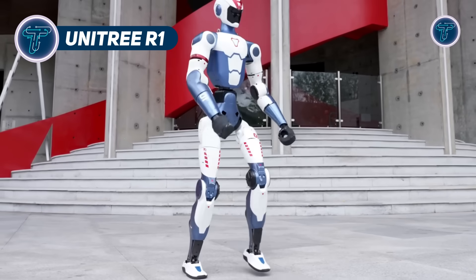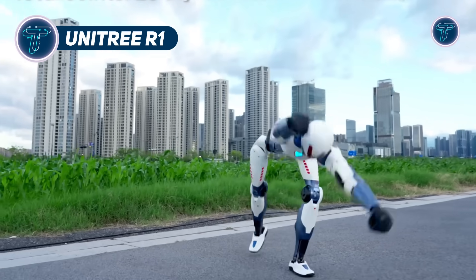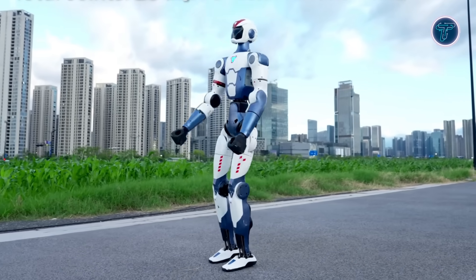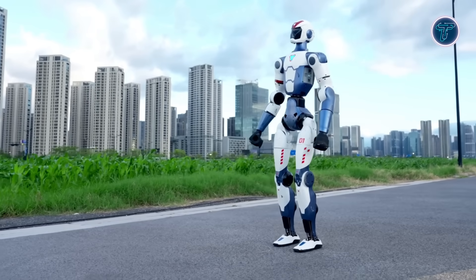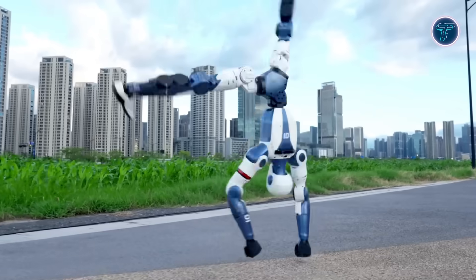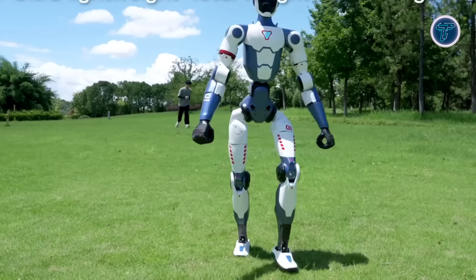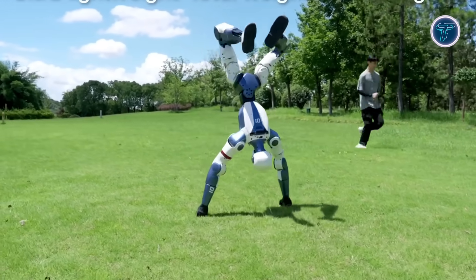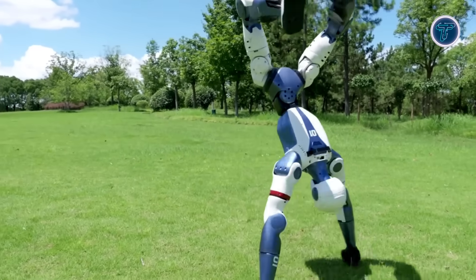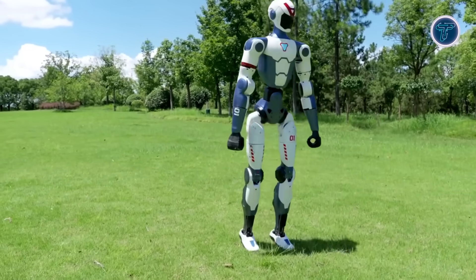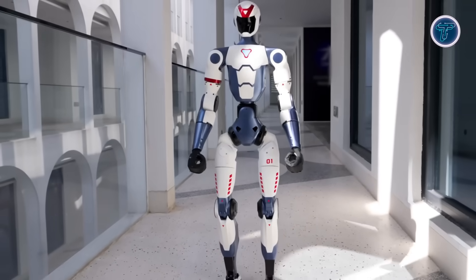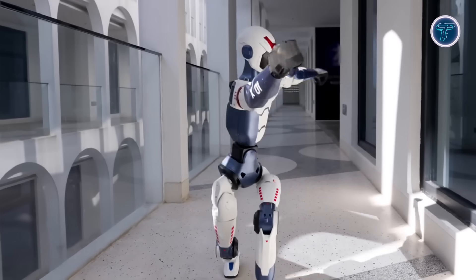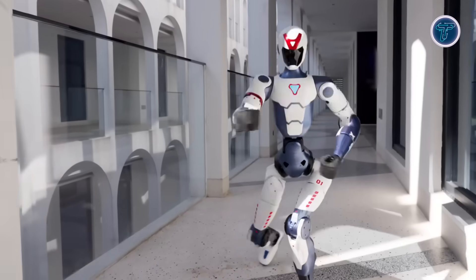UNITREE-R1. UNITREE-R1 is a life-sized humanoid robot designed for high-level movement, artificial intelligence development, and seamless interaction with humans. Weighing approximately 25 kilograms, it combines high agility with expressive motion, capable of running, jumping, punching, and even performing cartwheels. Equipped with 26 high-torque motorized joints across its limbs, waist, and head, the R1 delivers precise, lifelike movement.